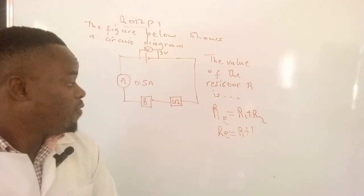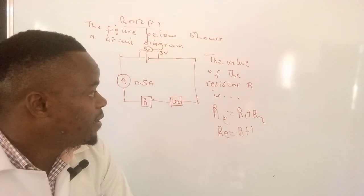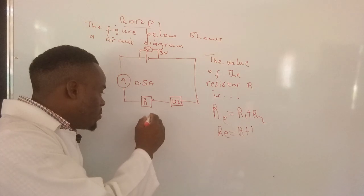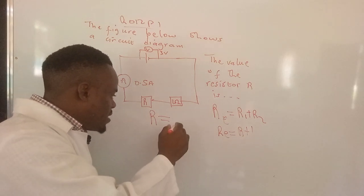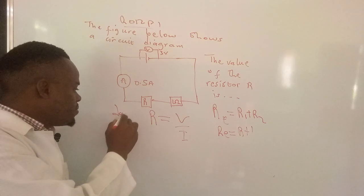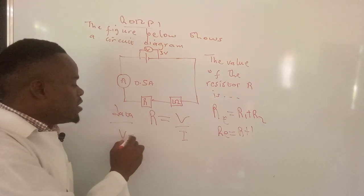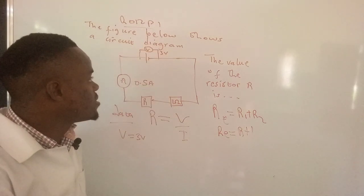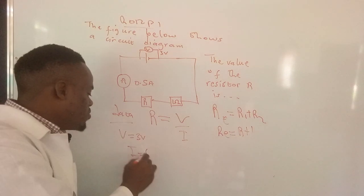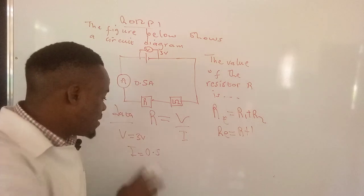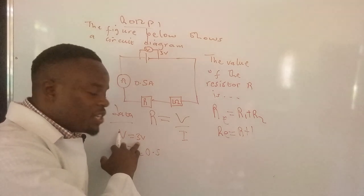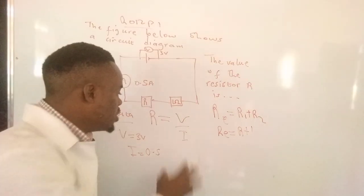So now for you to determine resistance, we can actually apply the formula for Ohm's law. Ohm's law says that resistance is equal to voltage over current. So we can collect the data: the voltage is equal to 3 volts, that's the potential difference or EMF, and then current has been given as 0.5. So we can apply these values—the value of equivalent resistance, the value of the potential difference, the value of current—into Ohm's law.